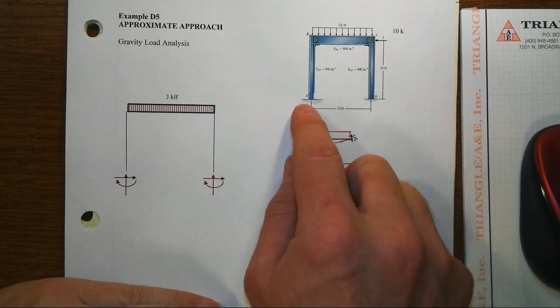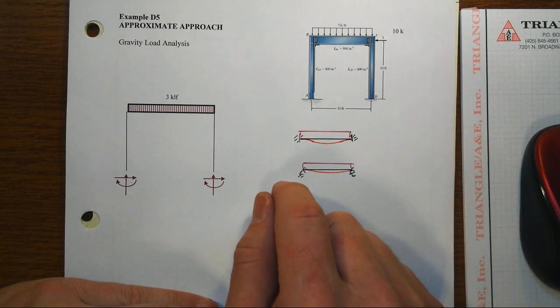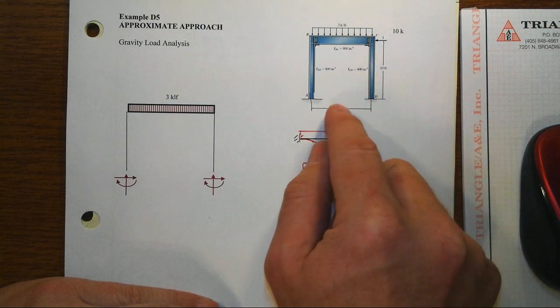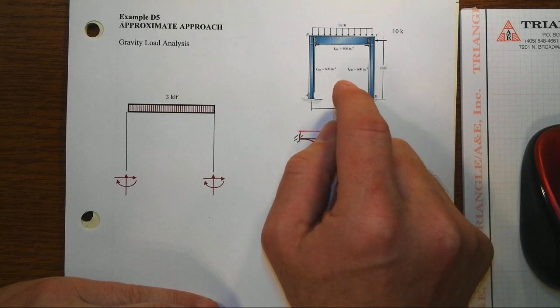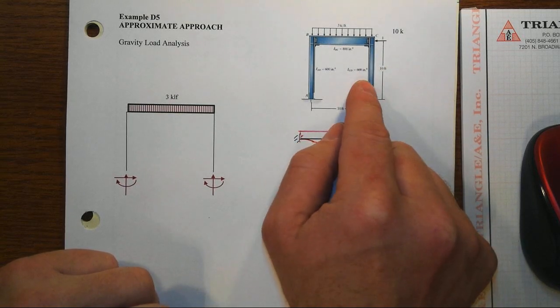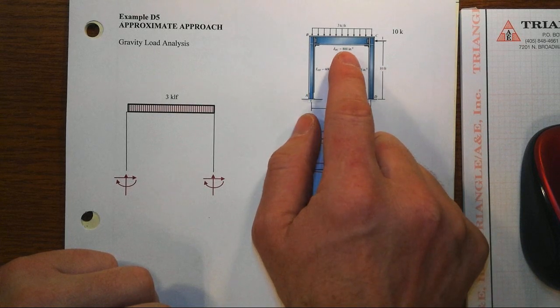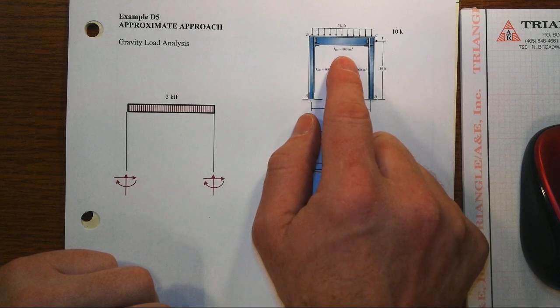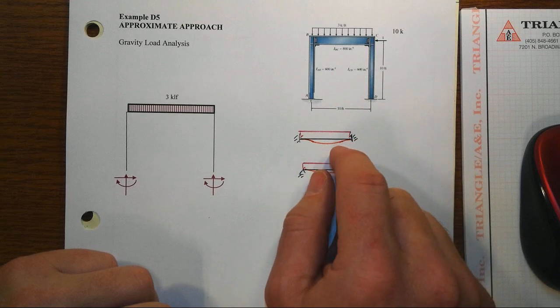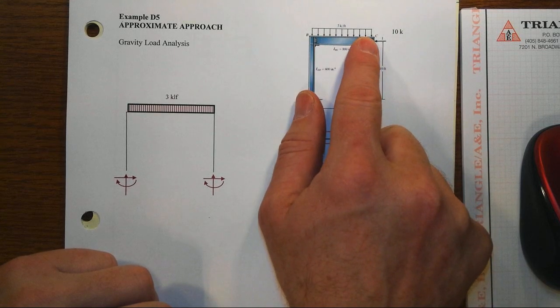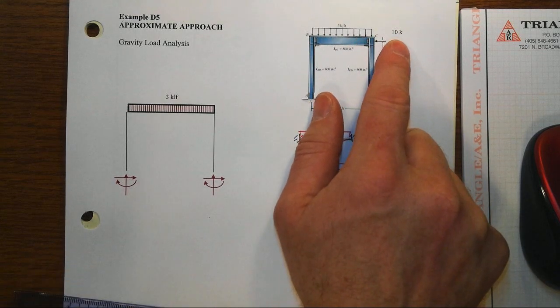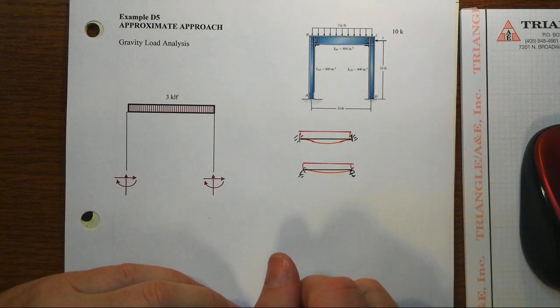This is an example of a single story single bay portal frame. We got 10 foot width, 10 foot height and two columns that are identical, 600 inches to the fourth moment of inertia, both steel. The beam is steel but it has a moment of inertia of 800 inches to the fourth. We got a distributed load of 3 kip per foot going downwards and a lateral load of 10 kips.